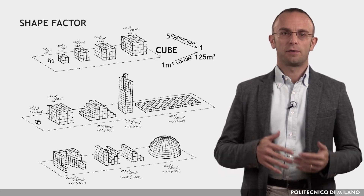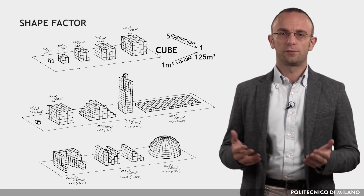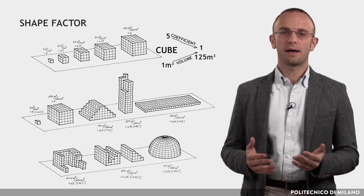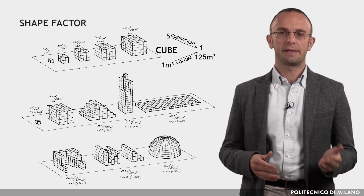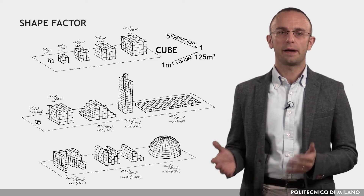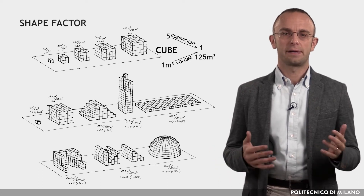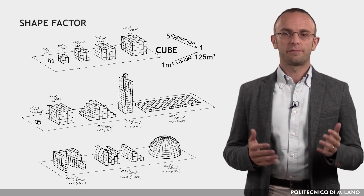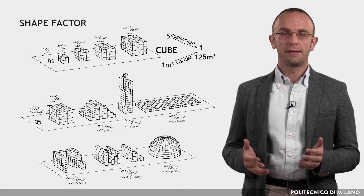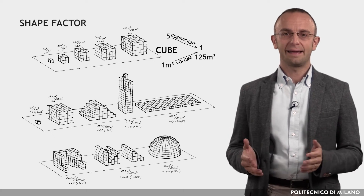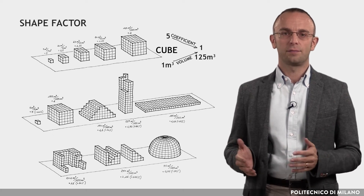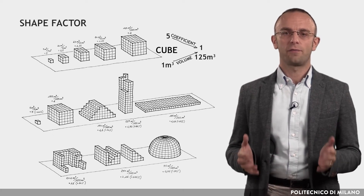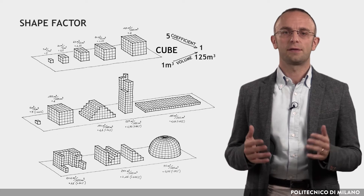Thus, the ratio of the surface to volume determines the heating rate during the day and the cooling rate during the night. At a constant volume, heat losses and gains increase moving away from the more compact form, which is the cube.